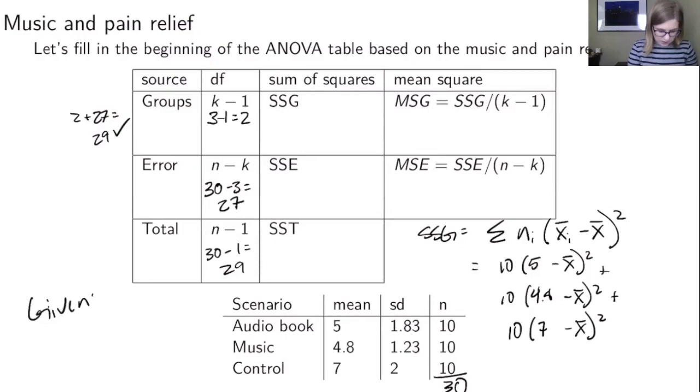The overall x bar is 5.6 and so then we would just substitute that in everywhere that we've got x bar. So this is going to be 5.6 and this is going to be 5.6 and this is going to be 5.6 and then we just need to crank through all the arithmetic.